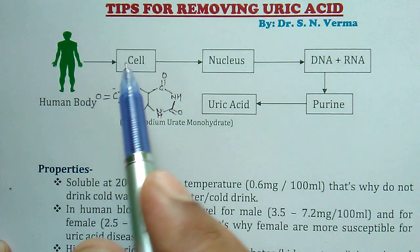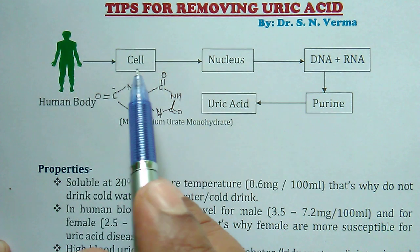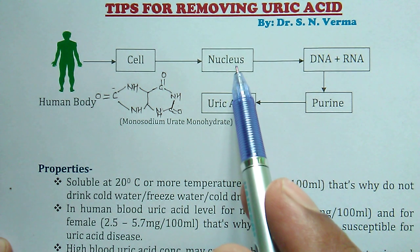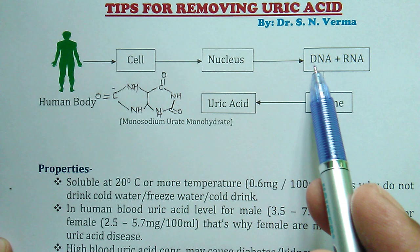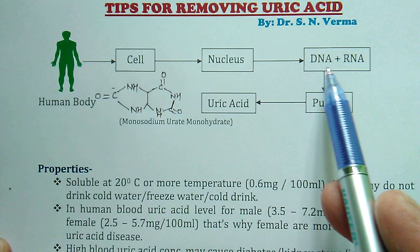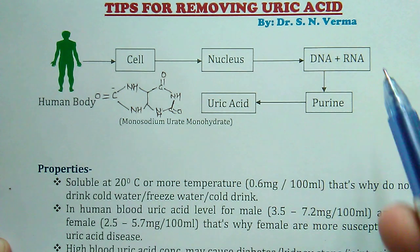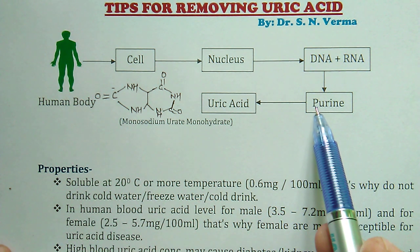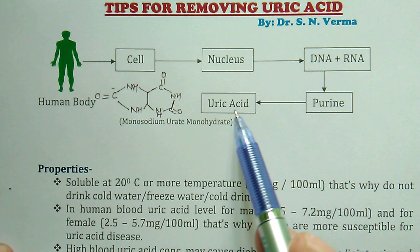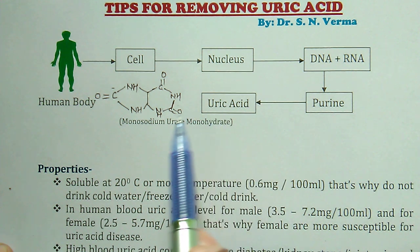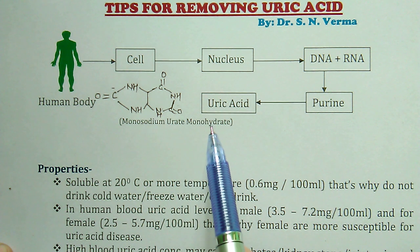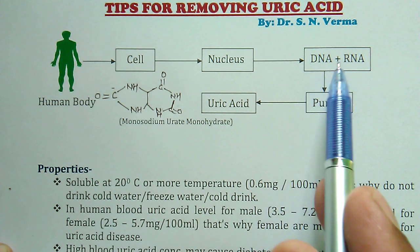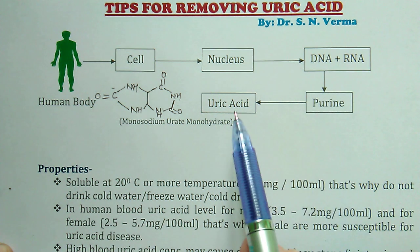The human body consists of a number of cells, and each cell is associated with a nucleus. In the nucleus there are numerous amounts of DNA and RNA. DNA and RNA are components of purine and pyrimidine. Purine, after metabolism, produces uric acid, which is deposited in the body in the form of monosodium urate monohydrate.